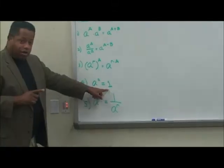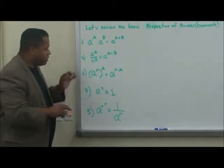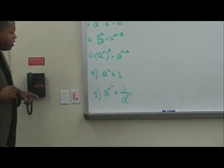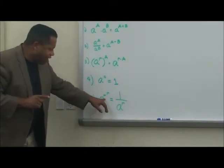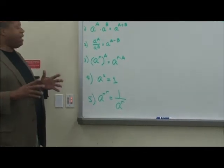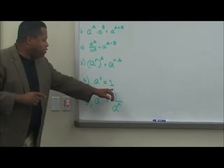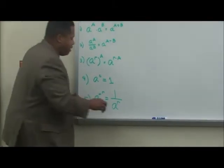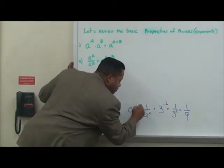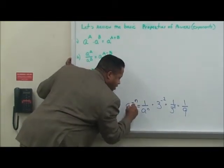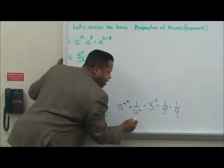That's a very important area to highlight, because a lot of students forget this simple property. Also, negative exponents — when A is raised to the negative R, or negative N — it's going to be one over A to the R, or one over A to the N. So A to the negative N is equal to one over A to the N.